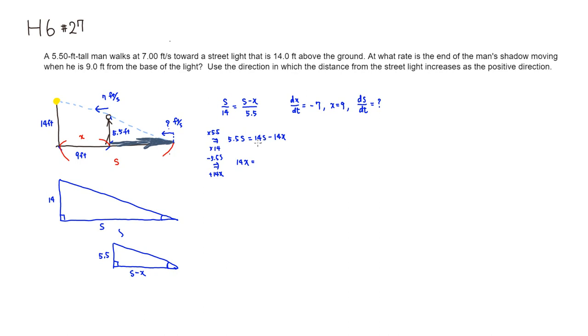14 minus 5.5S would be 8.5S. Then if you divide through by 8.5, we can isolate S. So it's going to be 14 over 8.5 times X equals S.